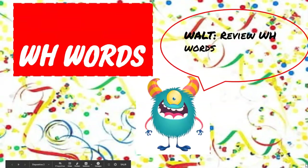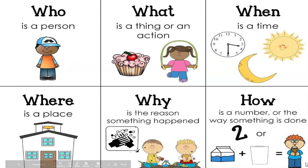WH words. We are going to review WH words. We have who as a person, what is a thing or an action, when is a time, where is a place, why is the reason something happened, and how is a number or the way something is done.